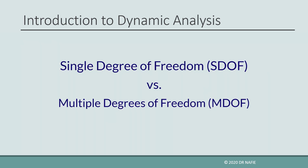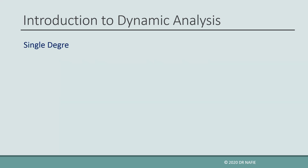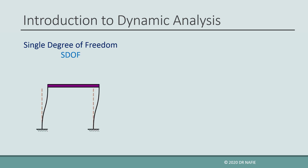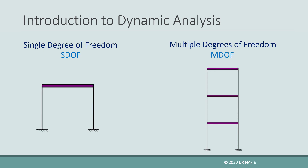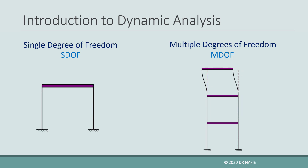Next, we will discuss the difference between a single degree of freedom and a multiple degree of freedom system. A single degree of freedom system has only one independent degree of freedom, such as the shown one-story shear frame. The dynamic analysis of this frame is quite simple because it only has one unknown movement. The multi-degree of freedom system has more than one independent movement, such as the three-story shear frame shown, which has three independent movements or three degrees of freedom — one at each story. The dynamic analysis of multiple-degree of freedom structures is more complicated.